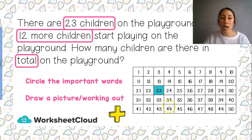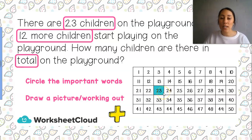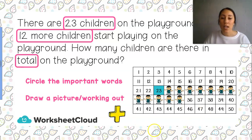Now we're going to show our working out on our hundred chart. We know it's a plus sum because of the words 'more' and 'in total.' We started with 23 children and they said 12 more children, so we're going to add 12. Starting at 23, we count 12 on: 1, 2, 3, 4, 5, 6, 7, 8, 9, 10, 11, 12 — and we landed on the number 35.